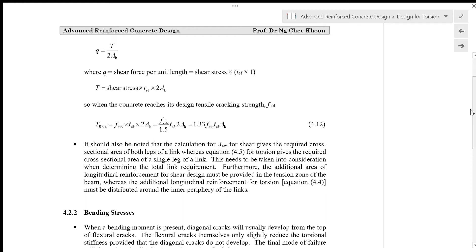This equals FCTK, which is the characteristic tensile strength of concrete, divided by 1.5 (the partial safety factor) multiplied by TEF × 2AK, which equals 1.33 FCTK TEF AK given in equation 4.12.